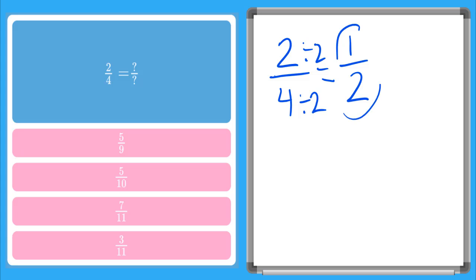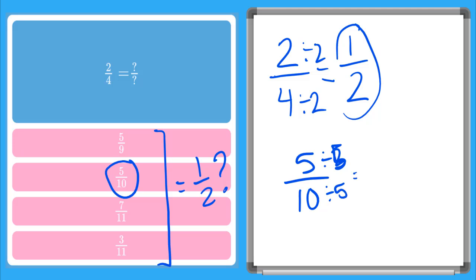Now if I know an equivalent fraction to 2 fourths is one-half, does it look like in any of these answers here that one of these is also equal to one-half? Yeah, this one's a little easier, five-tenths. So five-tenths, if we divide both of these by five, I'll get one-half.